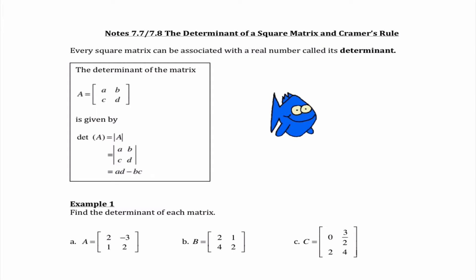Hey guys, it's Ms. Miklos, and today we are covering 7.7 and 7.8. We're going to talk about how to find the determinant of a square matrix and how to use a method called Cramer's Rule. And if you were in Honors Algebra 2 last year, you've actually learned all this before, so good news — it's review.